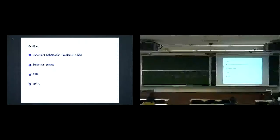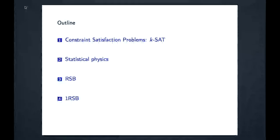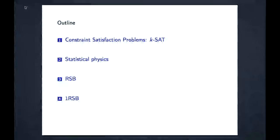The first part will be a review of constraint satisfaction problems — the same topic mentioned in the first lecture — followed by a review of the statistical physics prediction for constraint satisfaction problems. The new focus will be on the meaning of replica symmetry breaking and one RSB, done in the context of zero temperature.